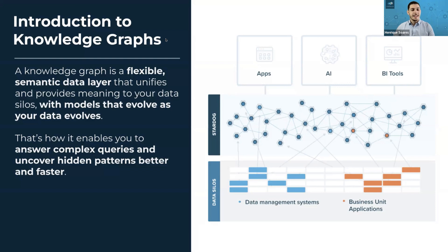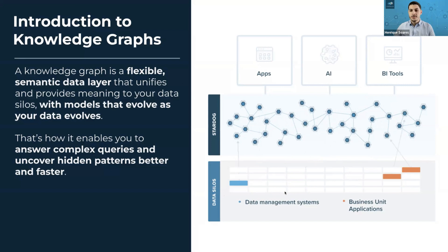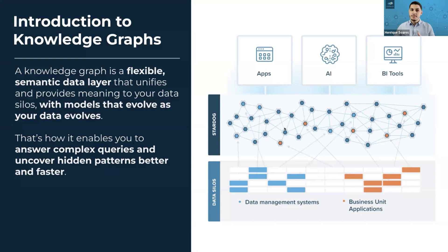Let's get started with an introduction to knowledge graphs. A knowledge graph is a flexible semantic data layer that unifies and provides meaning to your data silos. Most companies start with data silos — different data management systems or business unit applications — and it's hard to maintain and connect them. Stardog acts as a flexible semantic data layer that provides meaning to all this data and connects it.